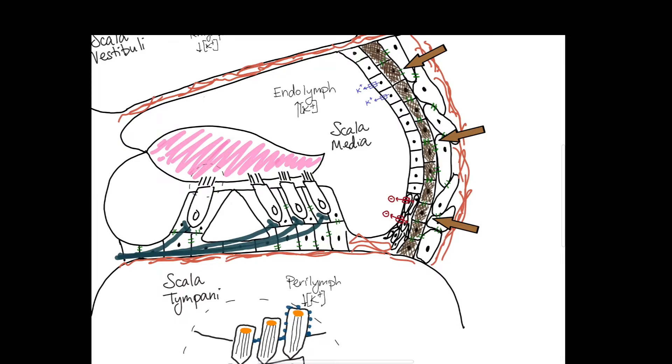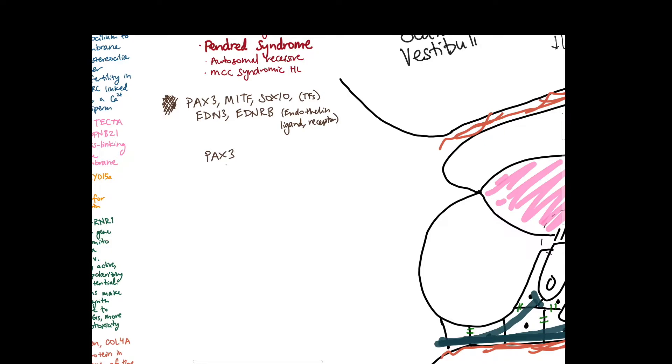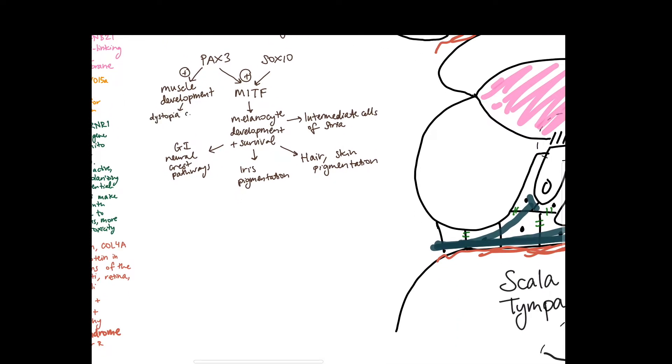This next syndrome is associated with the pigmented cells of the body. So in the cochlea these would be the pigmented intermediate cells of the stria vascularis. So the genes involved here are PAX3 which stimulates MITF and that's also stimulated by SOX10. All these are transcription factors and PAX3 and SOX10 are actually synergistically stimulating MITF. MITF is important in melanocyte development and survival. So it can lead to ultimately the neural crest cells which will go to the intermediate cells of the stria, hair and skin pigmentation, iris pigmentation, the GI neural crest pathways. And in addition PAX3 also leads to muscle development and so dysfunctions in these can lead to dystopia canthorum or limb anomalies along the PAX3 pathway or along the melanocyte development pathway.